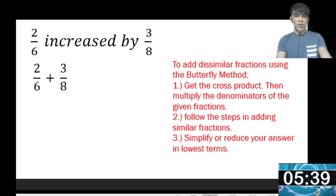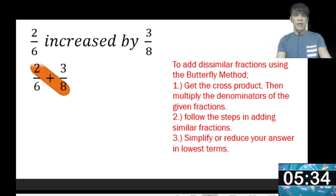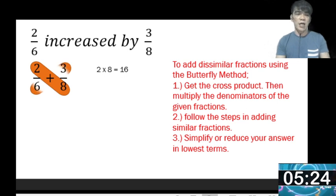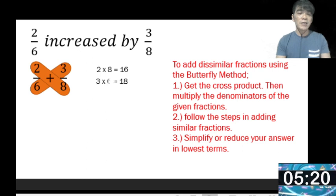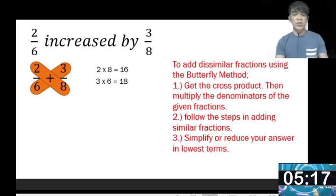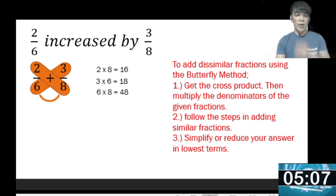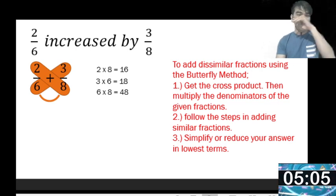Doing the same steps: get the cross product. Multiply the numerator of the first fraction by the denominator of the second fraction — 2 times 8 equals 16. Then multiply the numerator of the second fraction by the denominator of the first fraction — 3 times 6 equals 18. Finally, multiply the denominators 6 and 8, giving you 48.